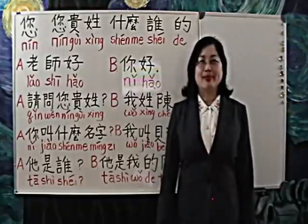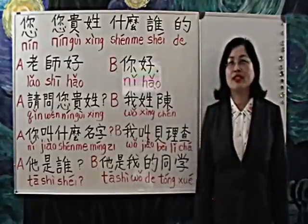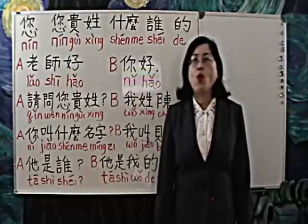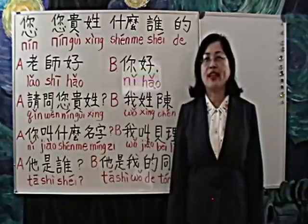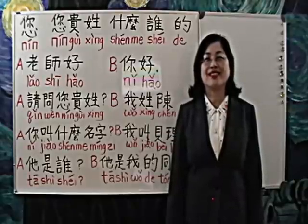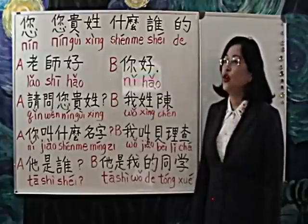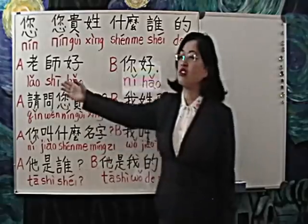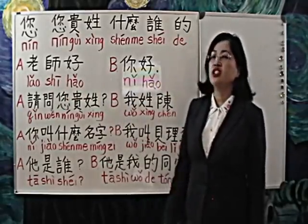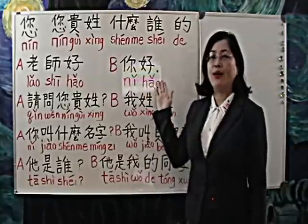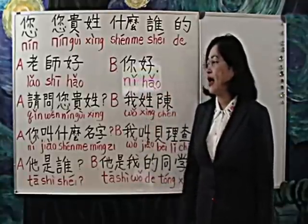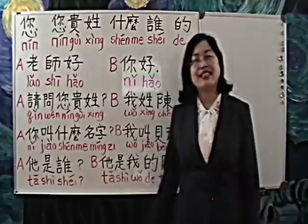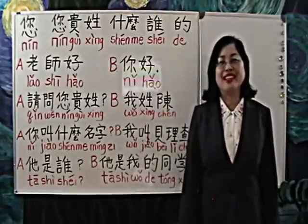您 is the polite form of the second person singular, 你. It is normally used to address one's elders or those with a higher social status. For example, when you don't know your teacher's last name, you see your teacher, you simply say 老师好, and your 老师 will respond to you 您好, and after that you'll say 请问您贵姓 — may I ask your last name. 请问您贵姓.